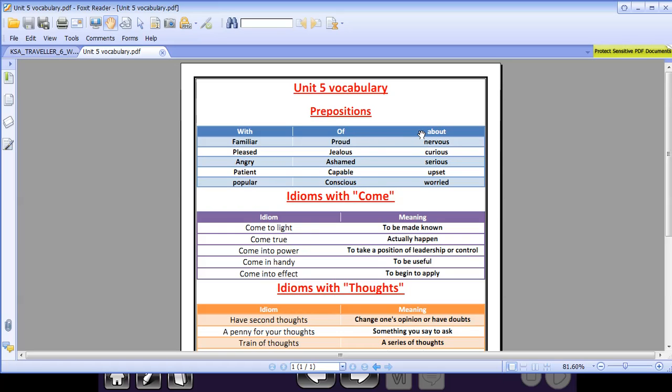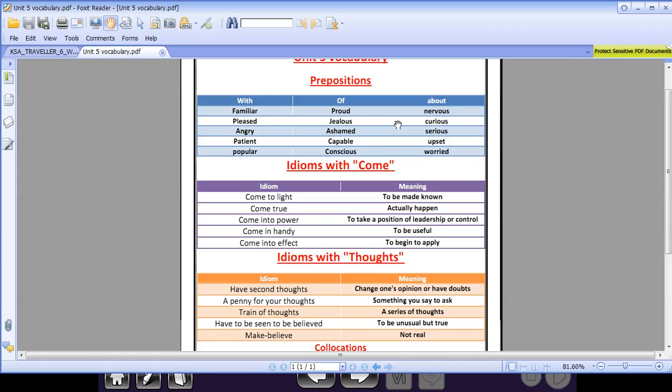Preposition about comes after adjectives like nervous about it, curious about it, serious about it, upset about it, and worried about it. Now we are going to revise some idioms that come with the verb come. Here is the idiom and here is its meaning.